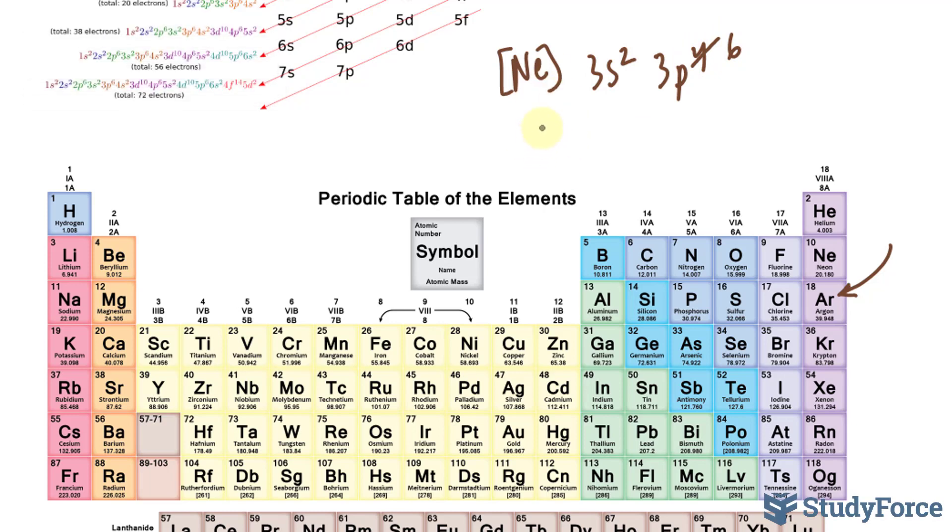And the orbital diagram will look like this. The orbital diagram for neon. And then a box for this orbital. Three boxes for this orbital. Spinning up, up and up. Down, down and down. Because there are no unpaired electrons, this is also diamagnetic.